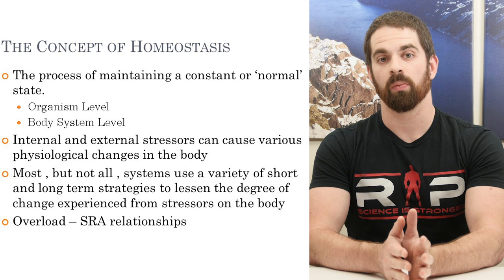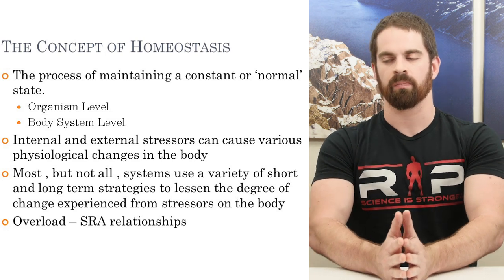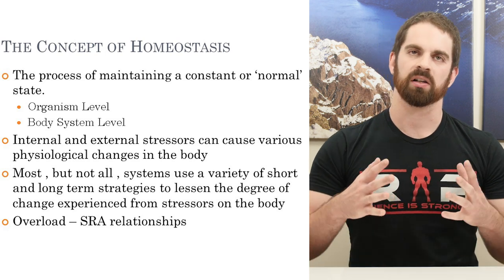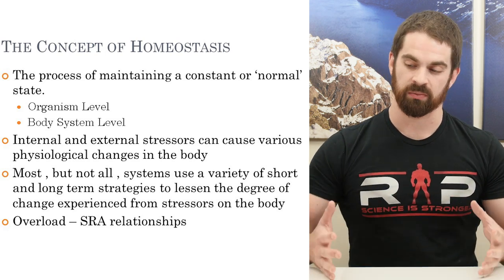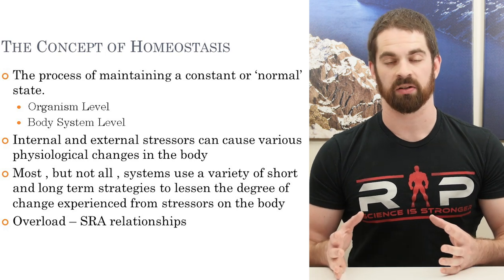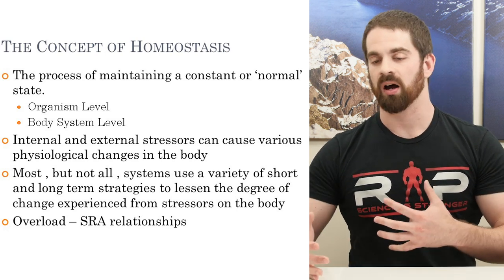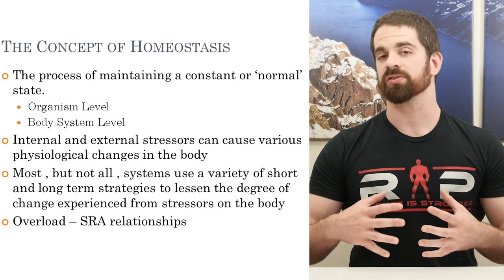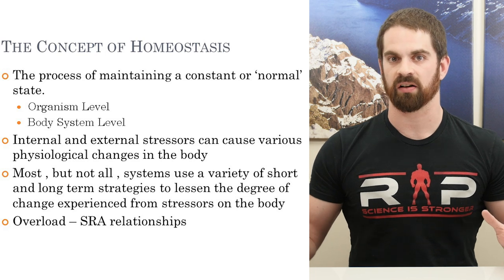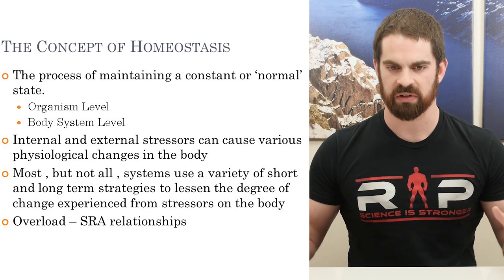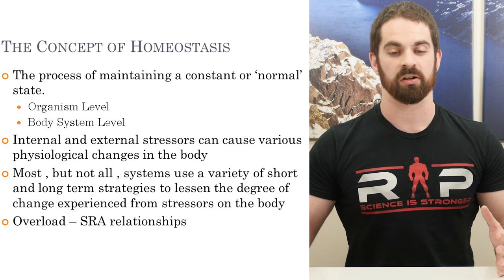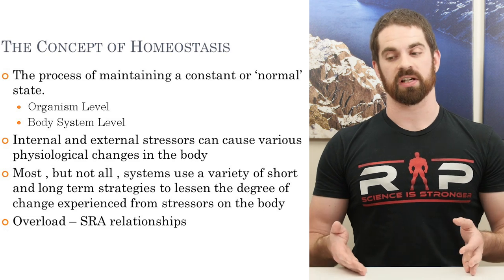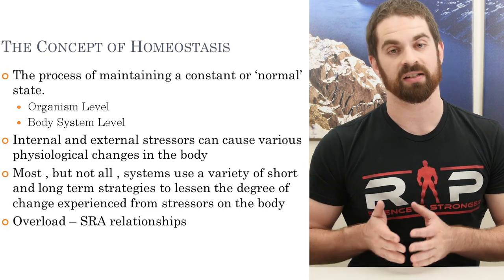When we're talking about homeostasis, this is essentially the way the body maintains a normal or regulated state. We can look at it at the system level — whatever body systems we're interested in, whether that's the endocrine system, blood balance of certain chemicals or pH, all sorts of different things. We can also look at a systemic effect of homeostasis of the organism, which can be difficult to narrow down. More often than not, in exercise physiology, we're going to be looking at it at the body systems level.